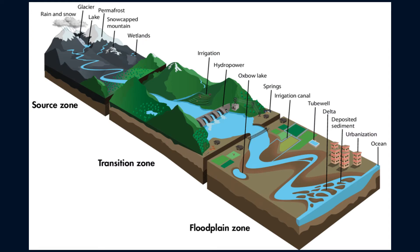Most river channels travel through three zones. Although this is the typical path of a river, not all rivers will go through all of the zones. All rivers, however, need to begin at a water source, usually from the source zone, also known as the erosion zone.